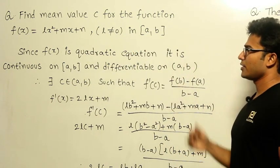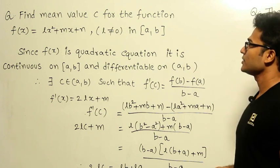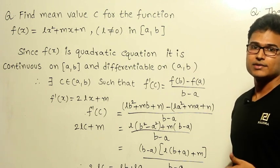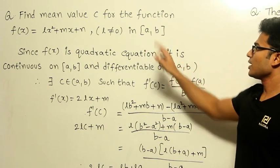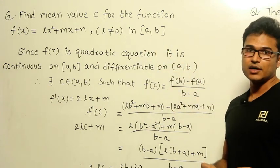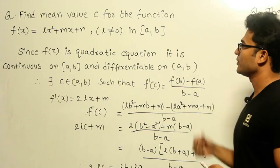Now if you see this, it is a quadratic function. Generally, quadratic functions are both continuous and differentiable over any range. So since it is given as [a,b], it is definitely continuous and differentiable in that range.